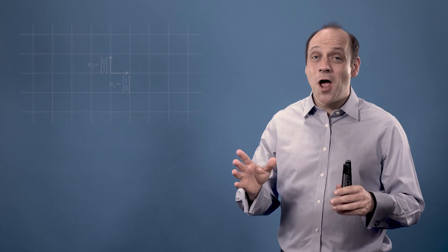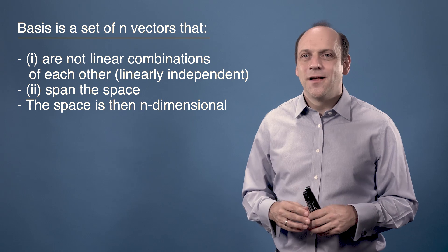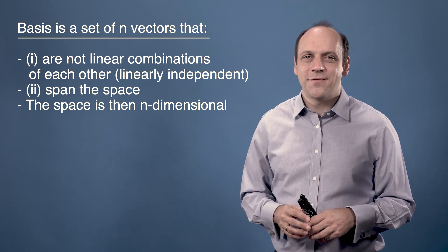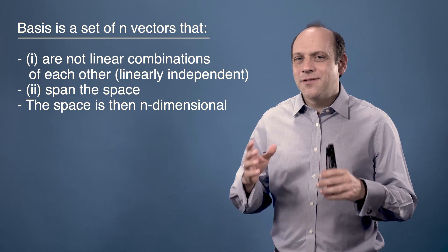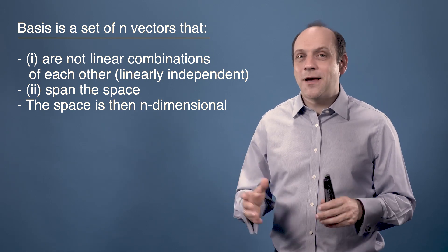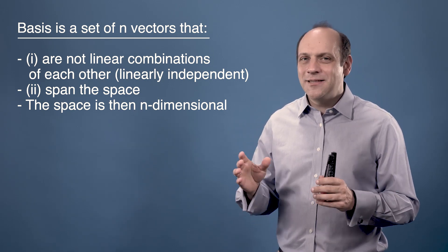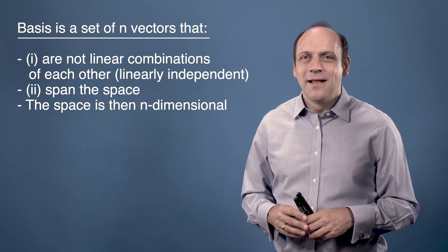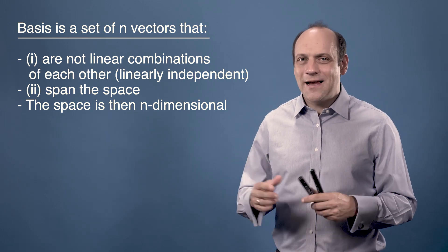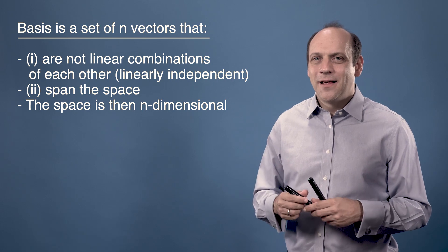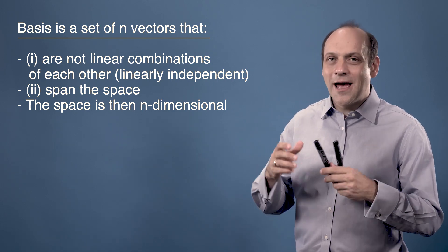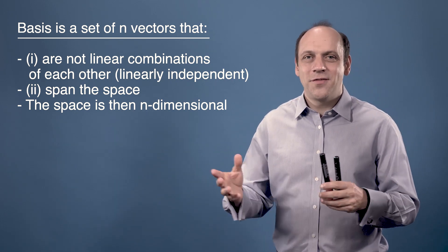First, let's define what we mean by a basis. A basis is a set of n vectors that are not linear combinations of each other — which means they're linearly independent of each other — and that span the space they describe. The space is then n-dimensional. This first criteria means that they're linearly independent if I can't write any of them down by taking some combination of the others.